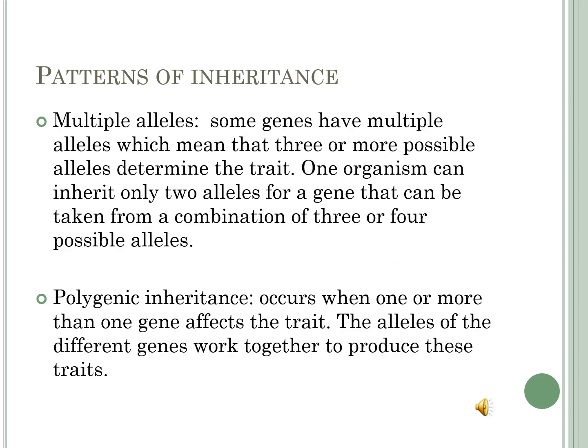Another type of complex patterns of inheritance includes multiple alleles and polygenic alleles. In multiple alleles, some genes have multiple alleles, meaning three or more possible alleles join together to determine the trait. However, one organism can only inherit two alleles — one from the father and one from the mother — so the combination of three or four alleles cannot all be present at once. Only two alleles determine the trait, and depending on which two are combined, they determine a specific trait or another.